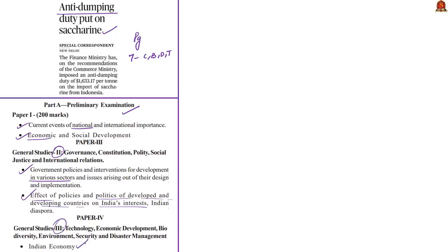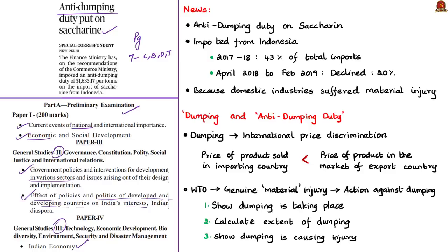The news article talks about the anti-dumping duty imposed on saccharine imported from Indonesia. This was imposed by the Finance Ministry on the recommendations of the Ministry of Commerce. An anti-dumping duty of $1,633 per tonne has been imposed. Until recently, Indonesia accounted for a large part of India's saccharine imports — 43% of total imports in 2017–18. However, imports from Indonesia declined, and in the period April 2018 to February 2019, India imported only 20% of its total saccharine imports from Indonesia.